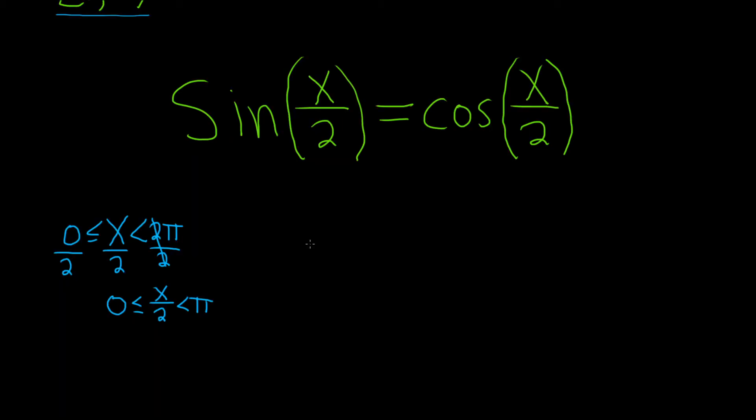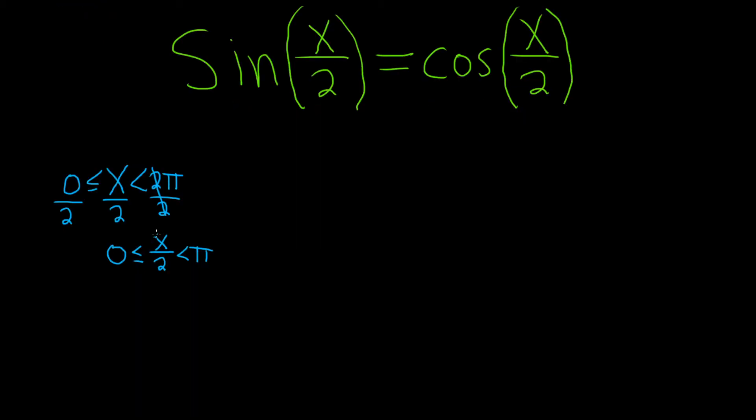And so now what we can do is we can rename this x over 2 just for convenience purposes. We can call it u. So we really have 0 less than or equal to u less than π. And so now our equation gets transformed. It's actually sine of u equals cosine of u. And this just makes it so much easier to think about.